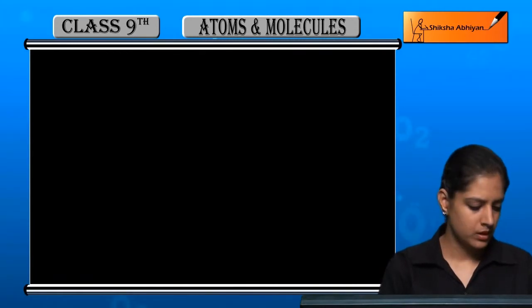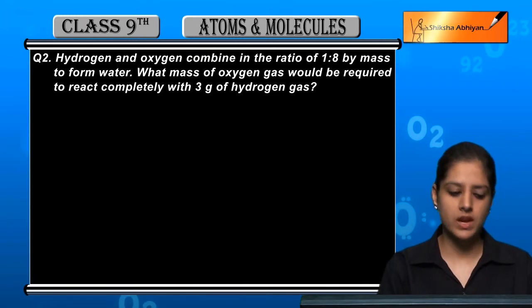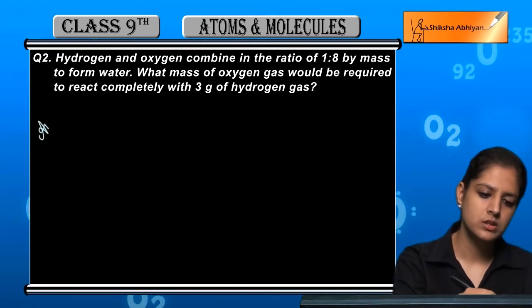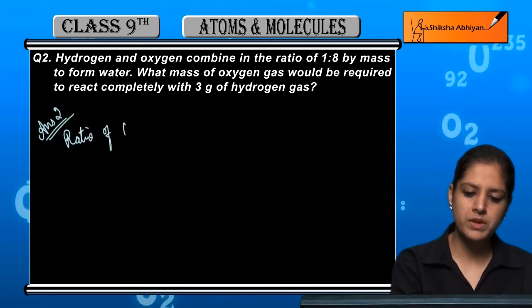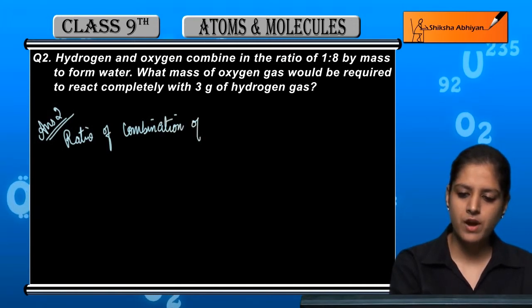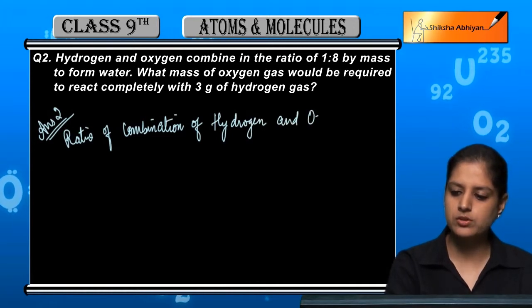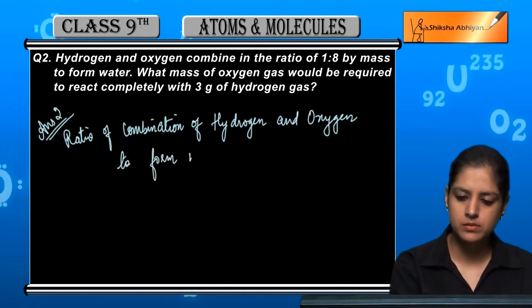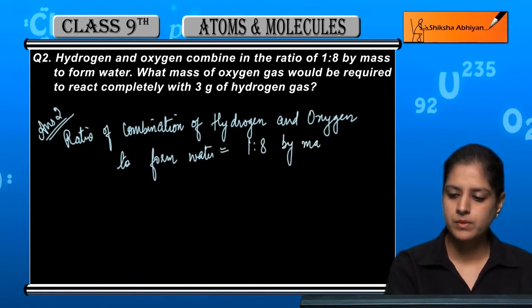Now question number two. Hydrogen and oxygen combined in the ratio 1 is to 8 by mass to form water. For hydrogen and oxygen to form water, we know that it is 1 is to 8 by mass.